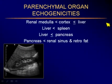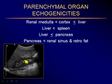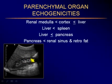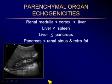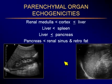As you scan the abdomen, you should always have in mind the different parenchymal organ echogenicities and maintain a relative scale. The renal medulla is the least echogenic of all upper abdominal organs — much less echogenic than the cortex of the kidney, which in turn is less than or can be equal to the echogenicity of the liver. We used to think cortical echogenicity equal to the liver was abnormal, but now we know that especially in young people, it can be equal.